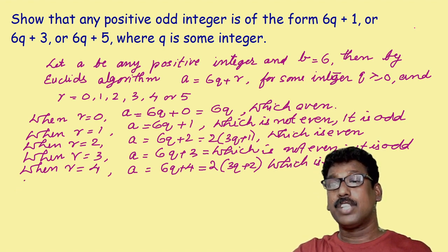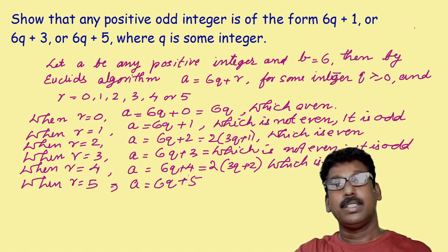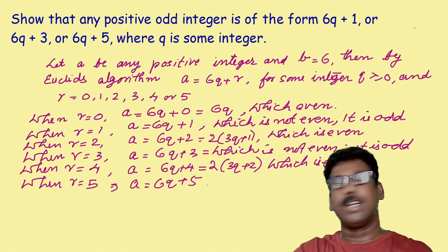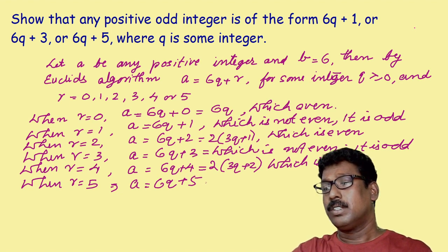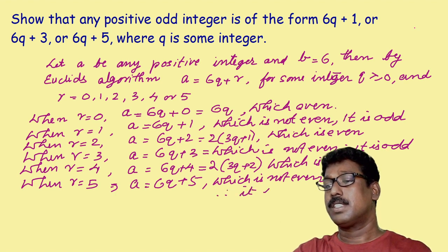Now, what about when r is equal to 5? When r is equal to 5, a can be written as 6q plus 5. Now this cannot be written as a multiple of 2, so this is not an even number. We can write: which is not even. Therefore, it is odd.